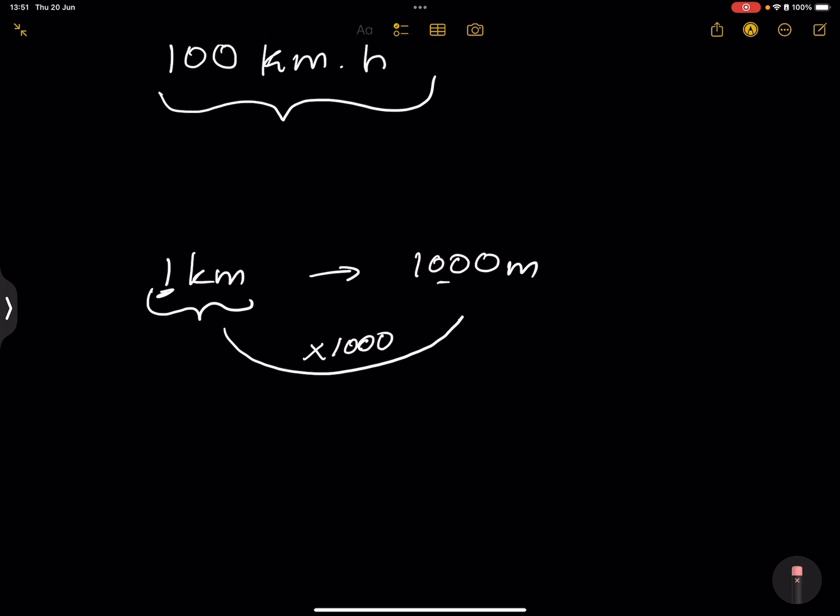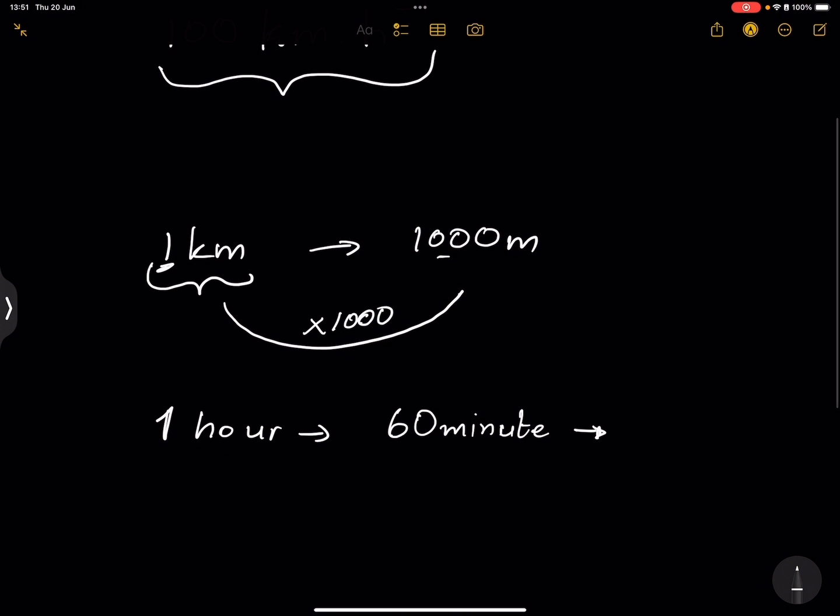If I have one hour, so one hour has got 60 minutes. But note that 60 minutes, or each minute rather, has got 60 seconds. So I want to convert to seconds.